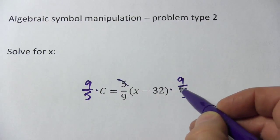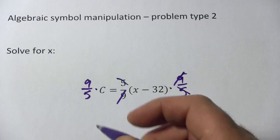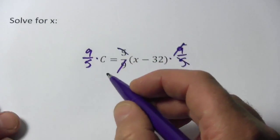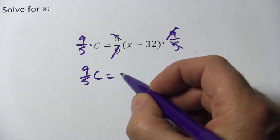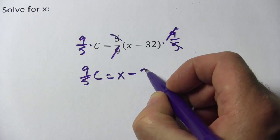And now the 5's cancel and the 9's cancel, and so really you just get 9 fifths times c equals, and now the parentheses don't matter, we just have x minus 32.